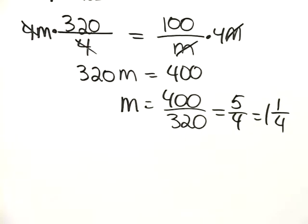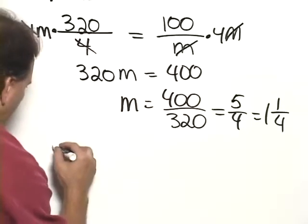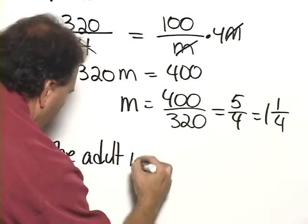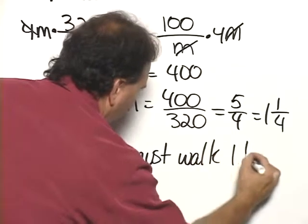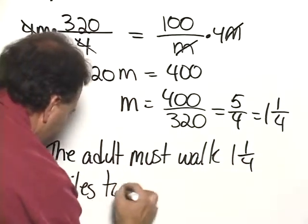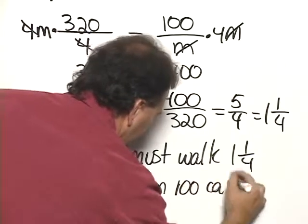If you check that answer, you'll find it is correct. So the adult must walk 1 and 1 fourth miles to burn 100 calories.